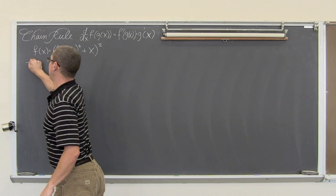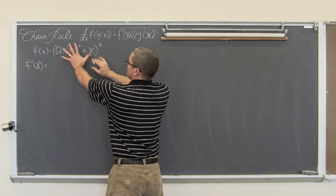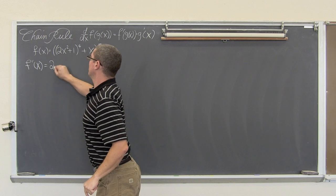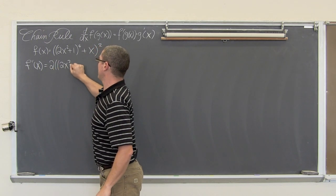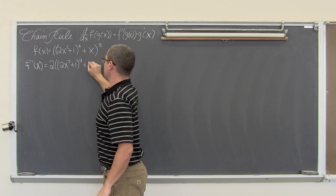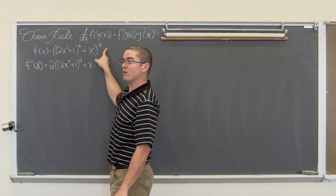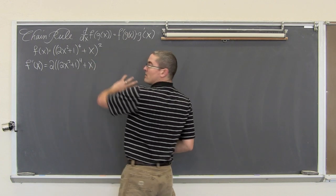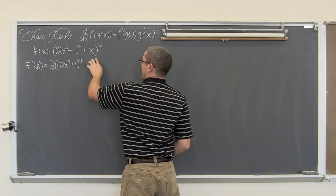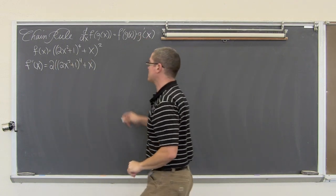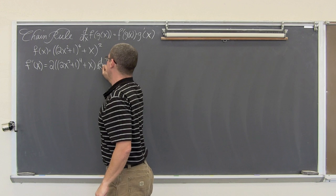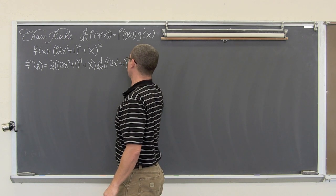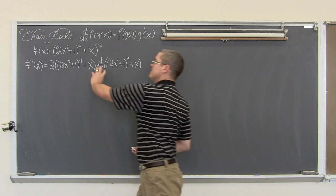Let's start with the general power rule. f prime of x — this is all something raised to the second power. Take the power of 2, drop it out front: 2, parenthesis, 2x squared plus 1 to the 4th power, plus x, and reduce that power of 2 by 1. Now for the chain rule, we need the derivative with respect to x of the inside: 2x squared plus 1 raised to the 4th plus x.